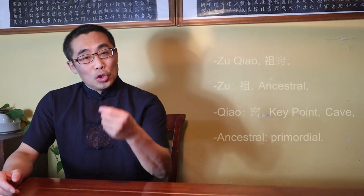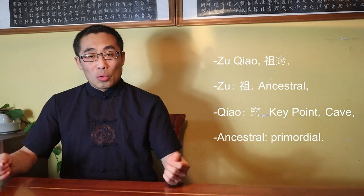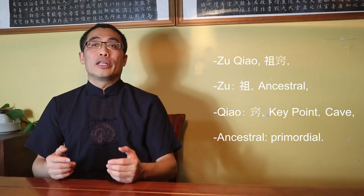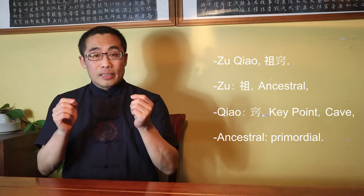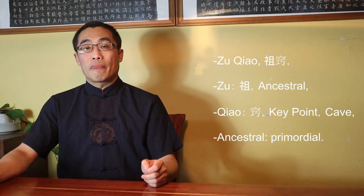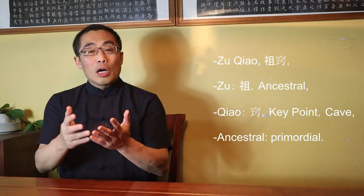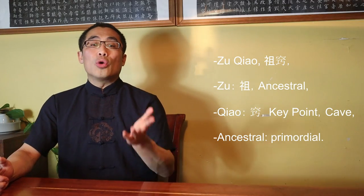Topic 1: Zu Chiao in Xiu Dao. Zu Chiao, a term used in Xiu Dao practice, consists of two characters. Zu means ancestral, Chiao means key point or cave. Put together, it is a place that is related to ancestral energy. Ancestral in Xiu Dao means primordial, since primordial energy is ancestral energy to a practitioner.